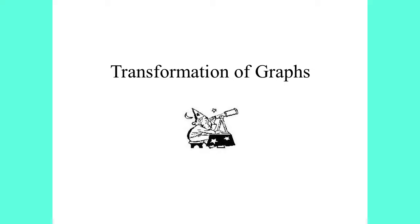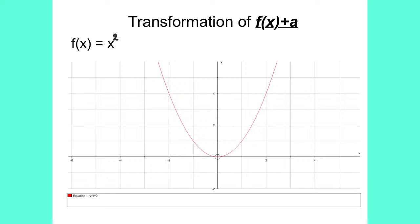Transformation of graphs. The first type of transformation is f of x plus a constant a. Here we have a picture of the function f of x equals x squared. As you can notice, the vertex of the graph is at the point 0, 0.